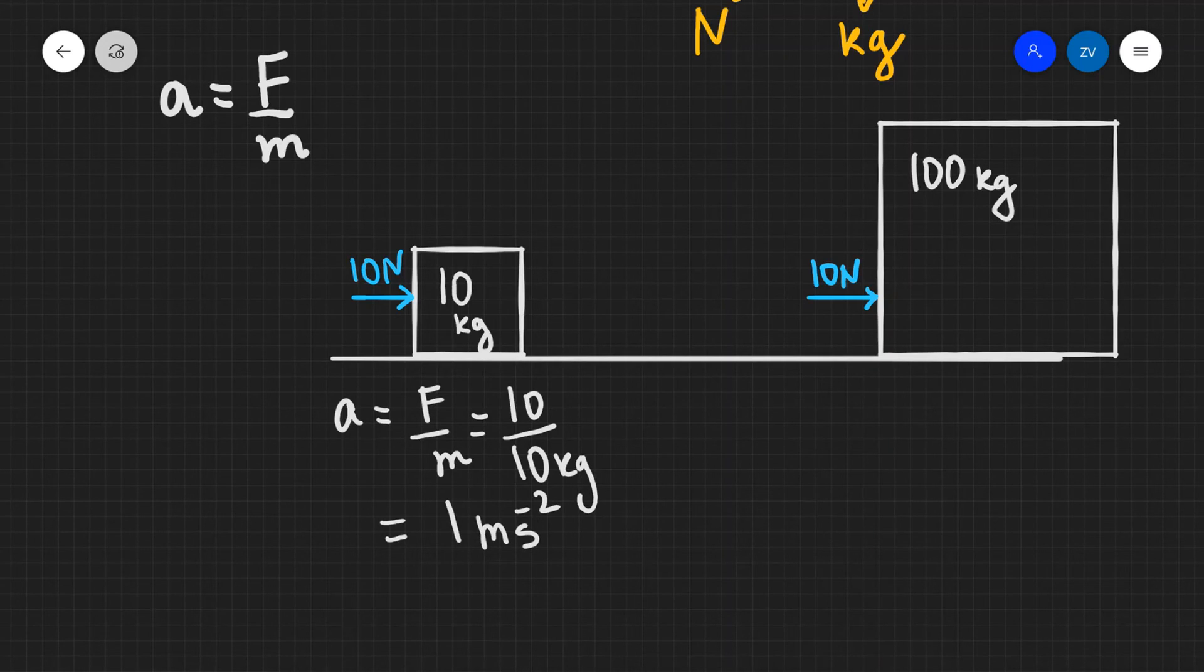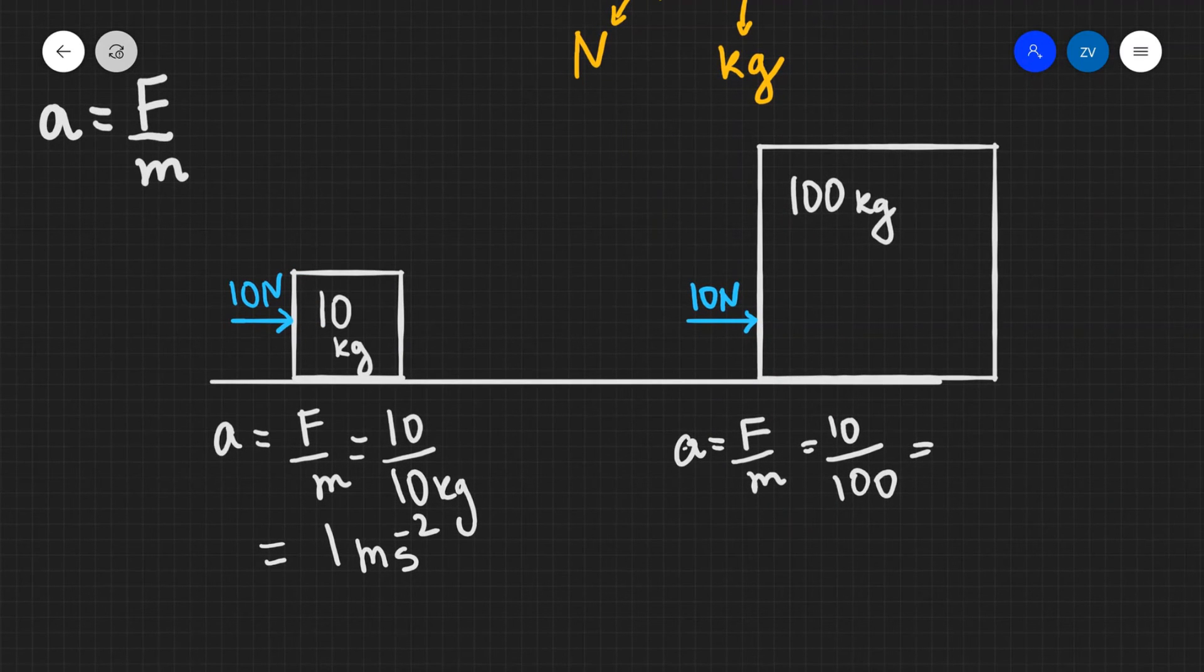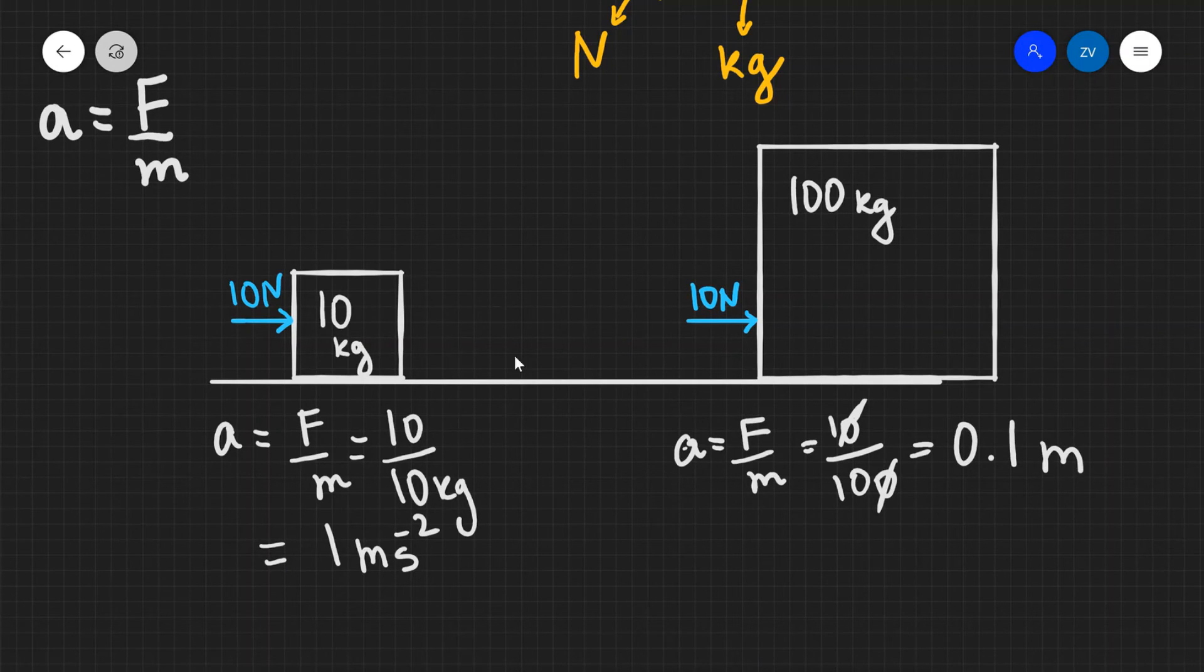In the second example, let's once again write down the formula. So a is equal to F over m. Our force is still 10 Newtons and our mass is now 100 kilograms. And if we were to just cancel those out, we're going to get that the acceleration is 0.1 meters per second squared.